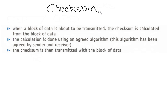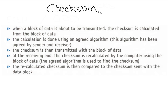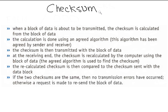The checksum is then transmitted with the block of data. At the receiving end, the checksum is recalculated by the computer using the block of data and the agreed algorithm. The recalculated checksum is then compared to the checksum sent with the data block. If the two checksums are the same, then no transmission errors have occurred. Otherwise, a request is made to resend the block of data.